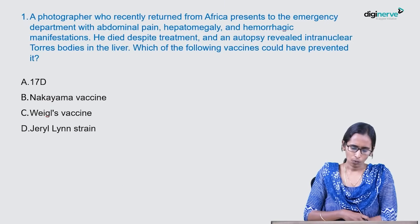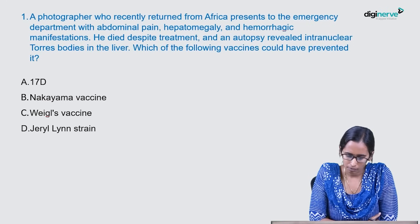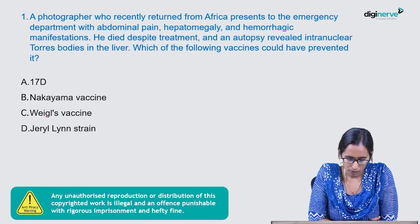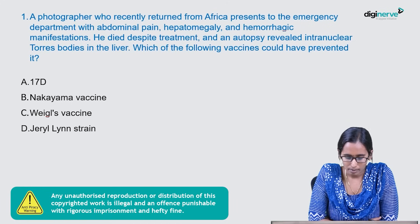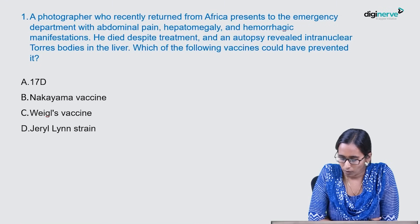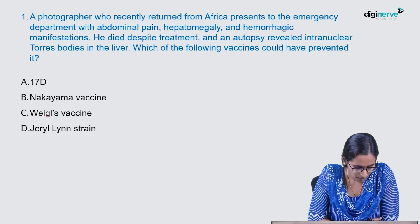In this session we'll be discussing NEET 2022 questions. The first question: a photographer who recently returned from Africa presents to the emergency department with abdominal pain, hepatomegaly, and hemorrhagic manifestations. He died despite treatment and autopsy revealed intranuclear Torres body in the liver. Which of the following vaccines could have prevented it? Options: 17D vaccine, Nakayama vaccine, Weagles vaccine, or Jeryl Lynn strain.